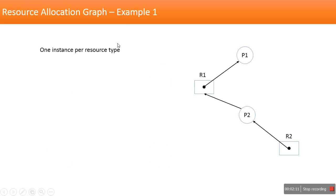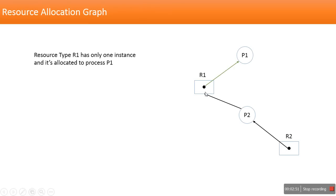Now let's take an example of the first type: one instance per resource type. The boxes represent resource types and the number inside represents the instance count. For example, if we have three printers, the resource type is printer with three instances. In this example, we consider only a single instance — one resource R1 and one resource R2.